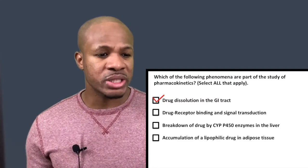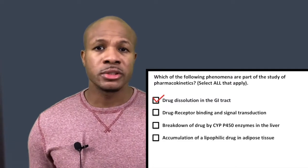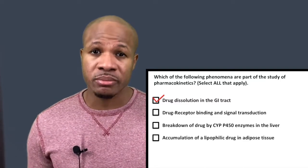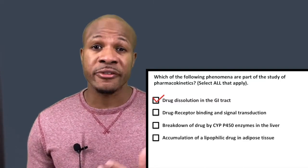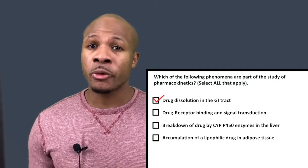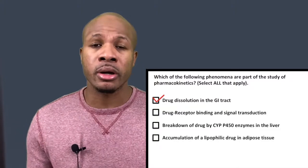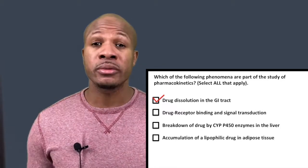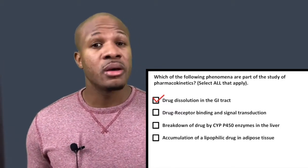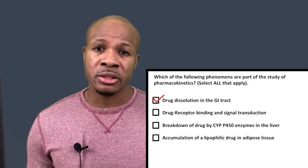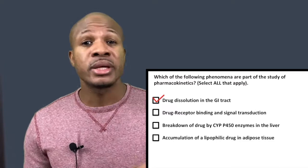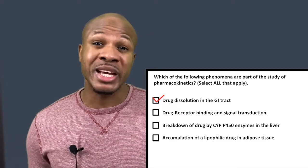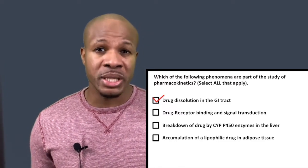The second option is drug receptor binding and signal transduction. Every drug has a target, and when the drug binds to its target, it causes an effect — from lowering your blood pressure, getting rid of your headache, or causing a decrease in inflammation. The question is, is that a pharmacokinetic process? The answer is no, because drug binding and signal transduction is what the drug does to the body, not what the body is doing to the drug. That's a pharmacodynamic process, not a pharmacokinetic process. So B would not be selected.